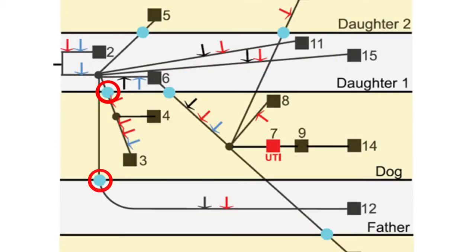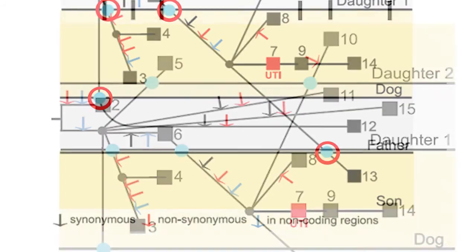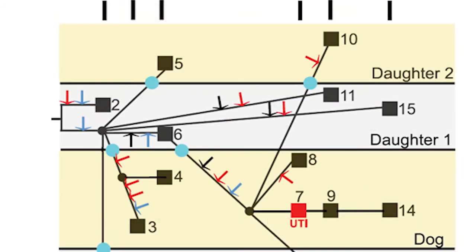The blue circles indicate points of transmission. The horizontal lines indicate daughter 1, daughter 2, the dog, the father and the son. If you look at the top left-hand corner, you'll see in 2005 where the initial presentation of the disease was.